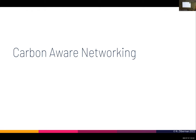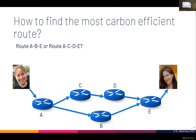Now I'm going to talk about a few directions for solutions — going from the easy to the hard. Let's say I want to find the most carbon efficient route between myself and Eve. There are two potential routes: either through switches A, B, and E, or through switches A, C, D, and E. Which one should I pick?